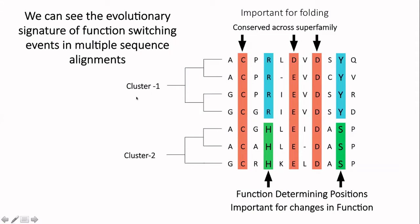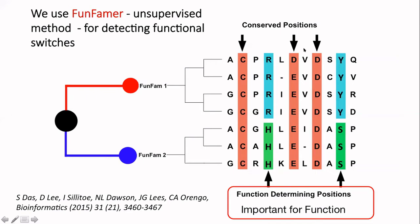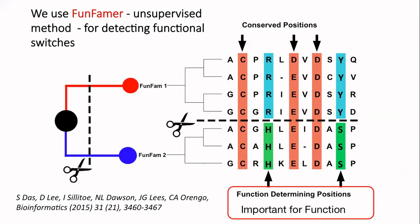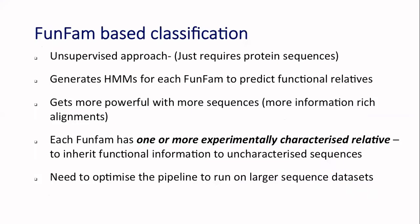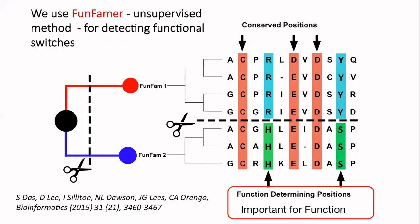I'm not going to go into a lot of detail because Nicola Baudin talked about this yesterday, but just to remind you that we segregate these groups using multiple sequence alignments and looking for patterns that distinguish them — positions that are differentially conserved. It's these differentially conserved positions that are important for function; the other positions tend to be important for stability and folding. This FunFam algorithm has been used to generate our functional families in CATH, and it only needs sequence information.